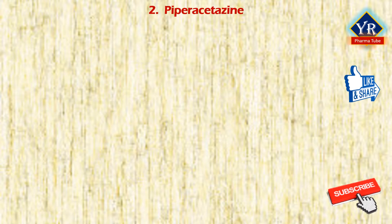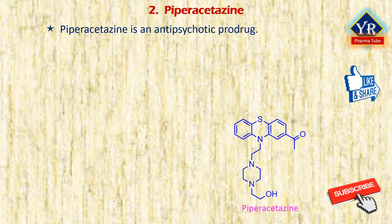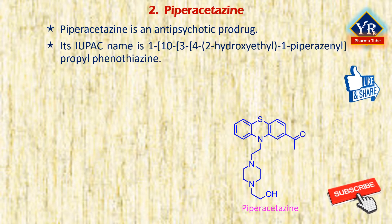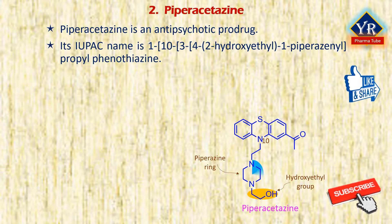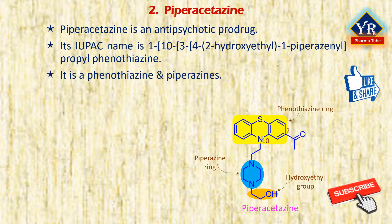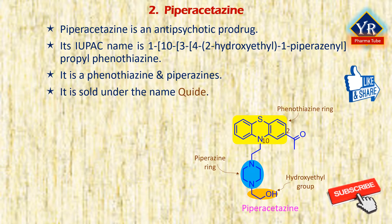The second drug of this lesson is piperacetazine. Piperacetazine is an antipsychotic prodrug. Its IUPAC name is 1-(10-(3-(4-(2-hydroxyethyl)-1-piperidinyl)propyl)-2-phenothiazinyl)ethanone. It is a member of phenothiazines and piperazines. The drug has similar pharmacological actions and uses as other phenothiazines. Piperacetazine is sold under the brand name Quide and is most notably used for the treatment of schizophrenia.